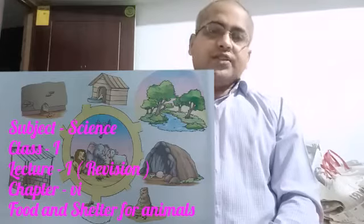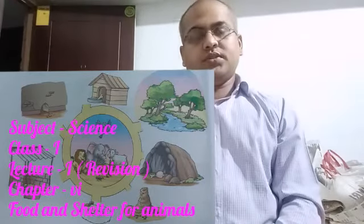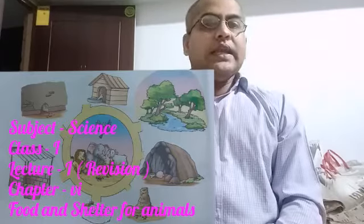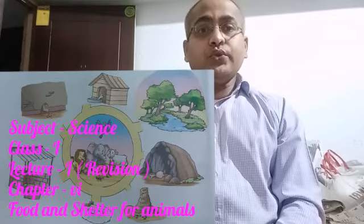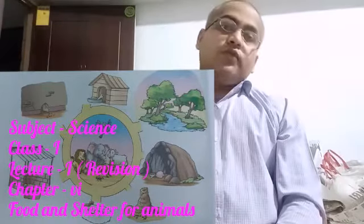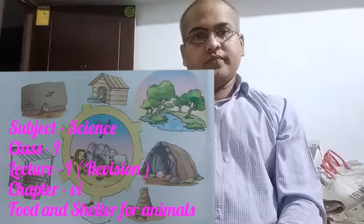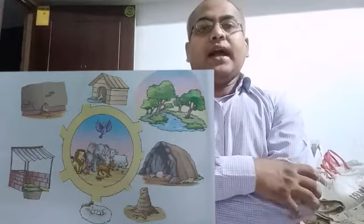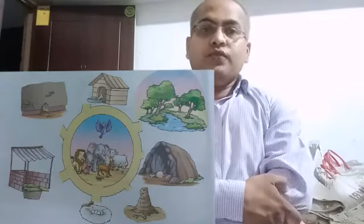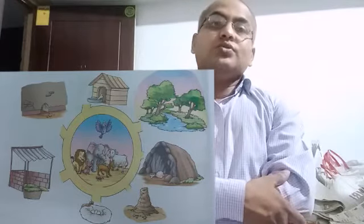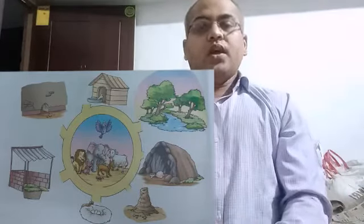We'll discuss Chapter 6, that is Food and Shelter for Animals. In Lesson 2 we learned that living things need food to eat, they need water for drinking, they need air to breathe, they grow, they feel, they move from one place to another. Animals are also living things and animals need food to grow well and to stay healthy.